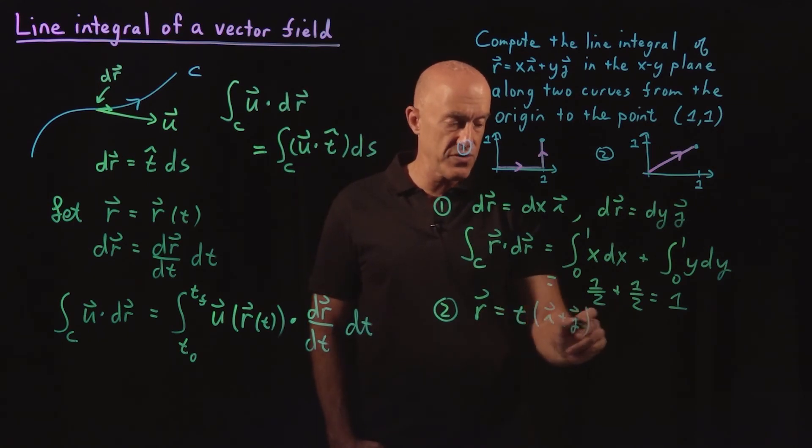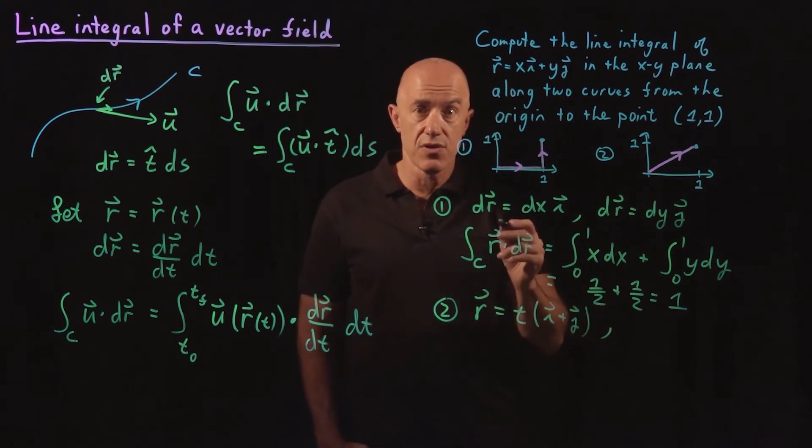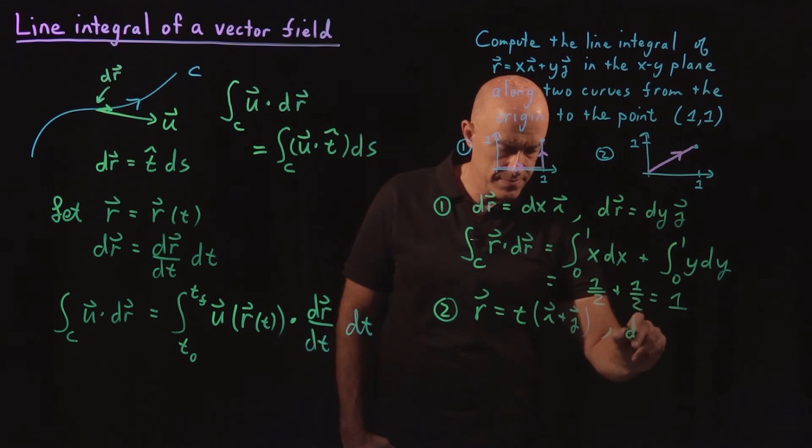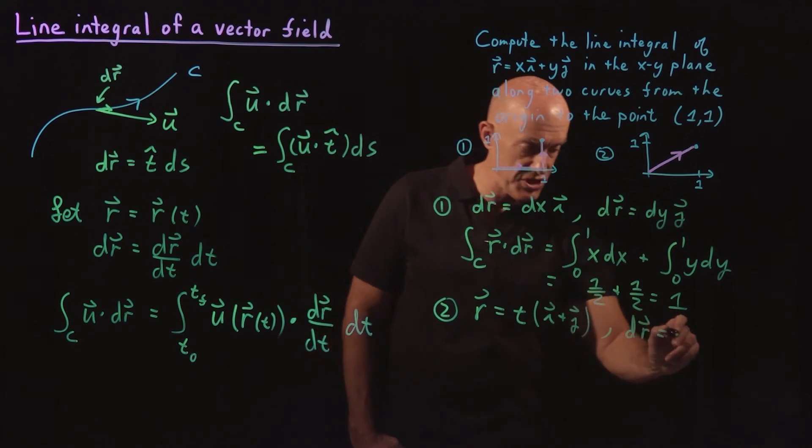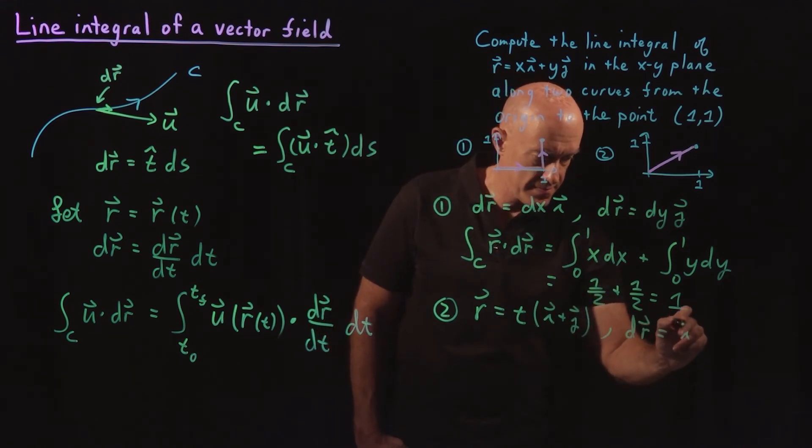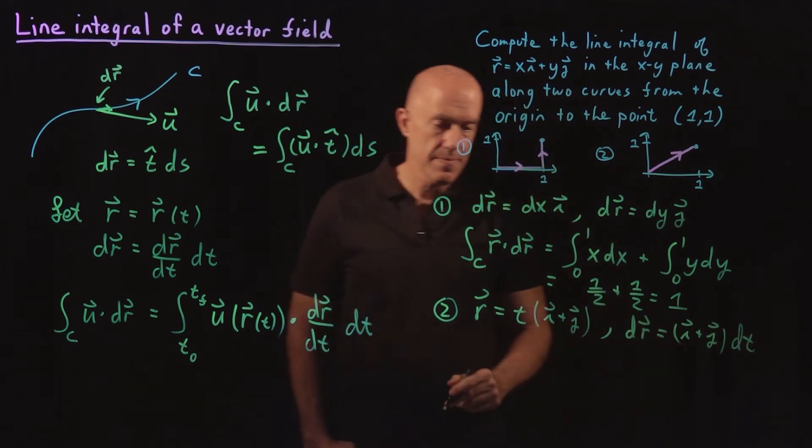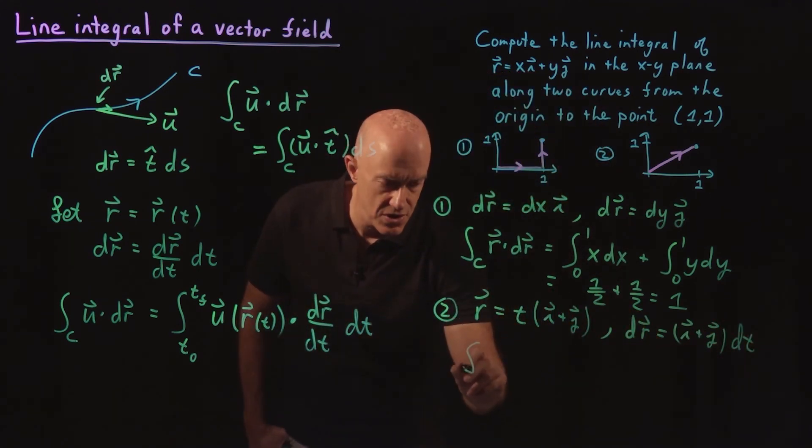So that's the parametrization of the curve. Then DR is simply (i plus j) dt.